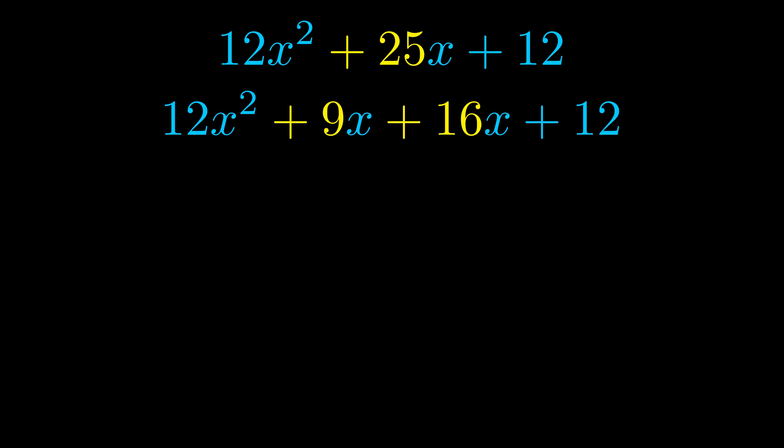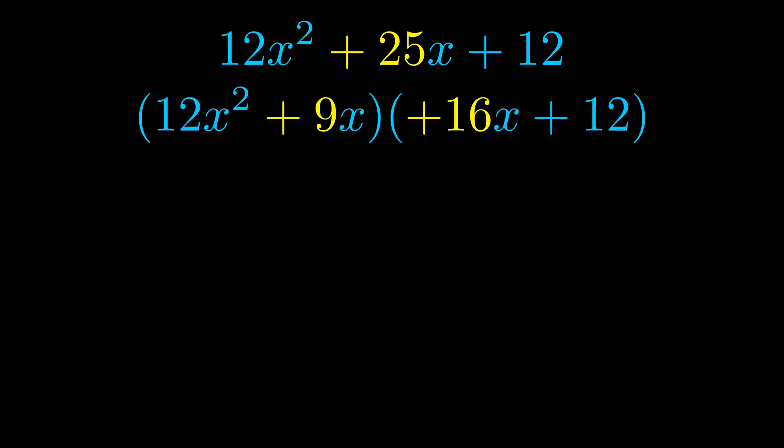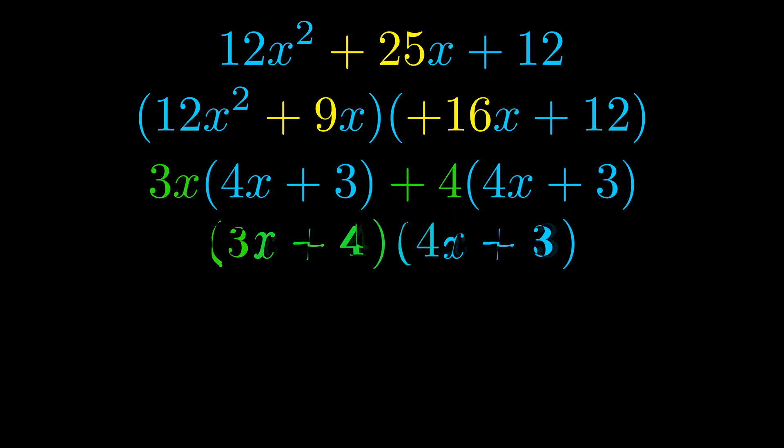Once we've done this we put parentheses around the first term and the last term, and we do that so that we can take the greatest common factor out of both terms. We can see the greatest common factor is now outside in green. Notice also how what remains inside the parentheses is the same in both cases. The blue values are the same.